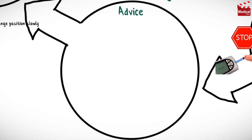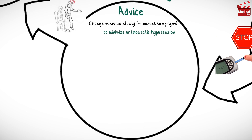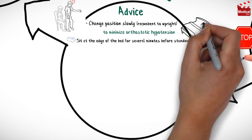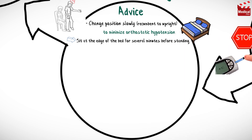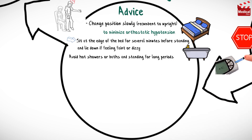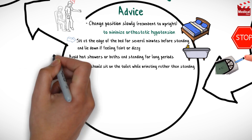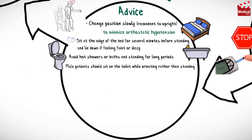Advise the patient to change position slowly, particularly from recumbent to upright, to minimize orthostatic hypotension. Sit at the edge of the bed for several minutes before standing, and lie down if feeling faint or dizzy. Avoid hot showers or baths and standing for long periods. Male patients should sit on the toilet while urinating rather than standing.